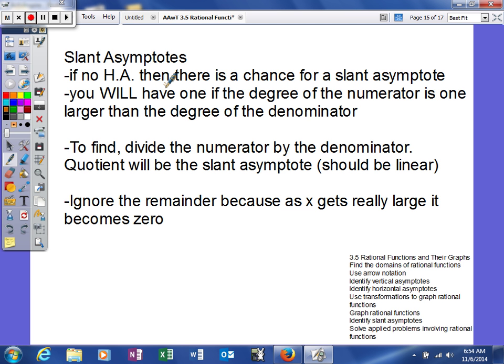You will have one if the degree of the numerator is one larger than the degree of the denominator. We know we do not have a horizontal asymptote if the numerator has a higher degree, and we will have a slant asymptote if it's larger by one than the denominator.